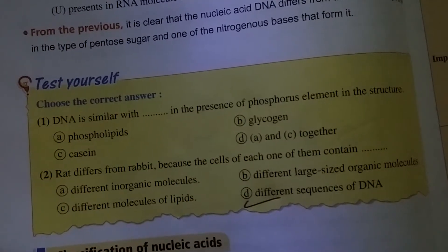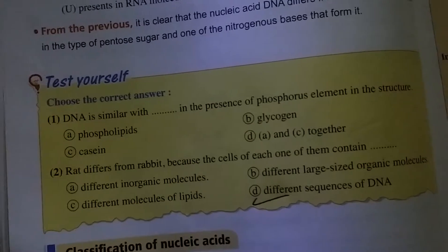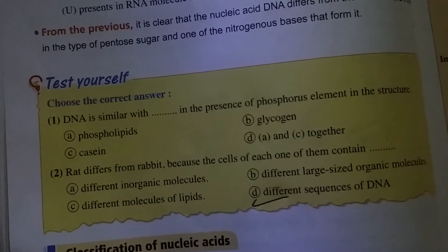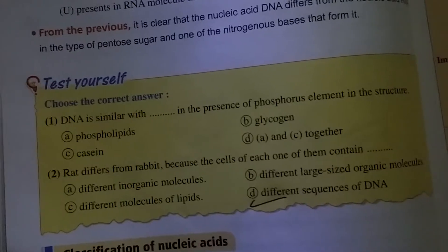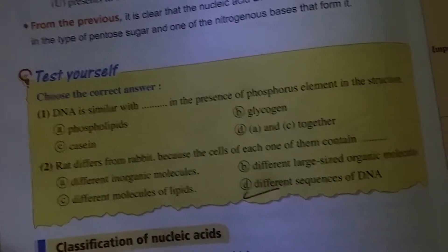Question number two: A red differs from a rabbit because the cells of each one of them contain different sequences of DNA.